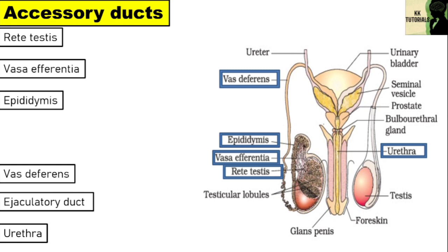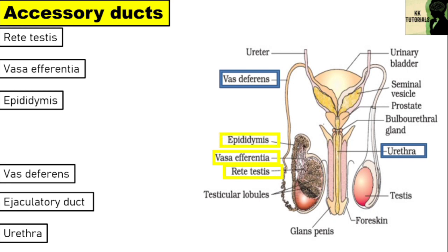All the seminiferous tubules of the testes at the posterior surface form a network of tubules called rete testis. 10 to 20 fine tubules arising from the rete testis are called vasa efferentia. They carry the sperms from the testes and open into the epididymis.